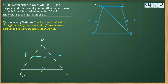...then that line will bisect the third side. That means R should be the midpoint of AC. So this is what the converse of the midpoint theorem says.